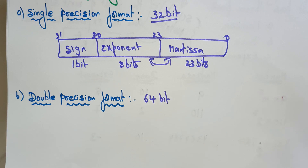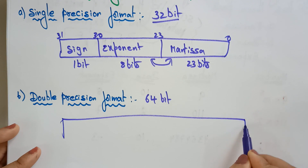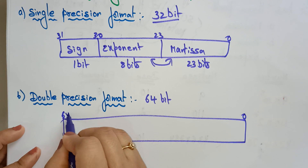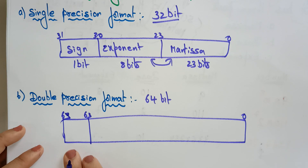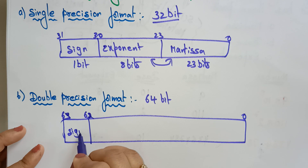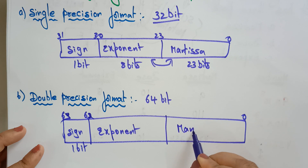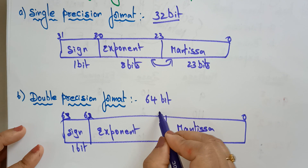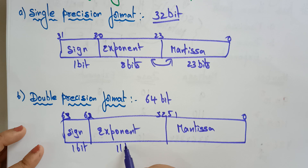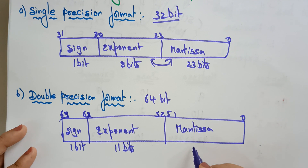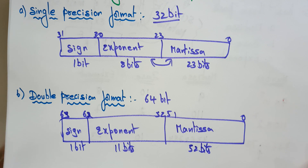For double precision, the size is 64 bits, bit positions 0 to 63. Bit 63 is the sign bit — one bit. The exponent runs from bit 62 to 52, which is 11 bits. The mantissa is bits 0 to 51, which is 52 bits. This is the IEEE 754 floating point number representation. In the next video I will explain how to represent numbers in single precision and double precision formats.